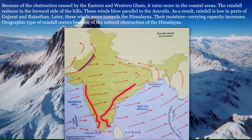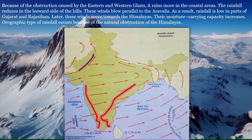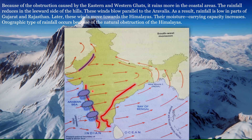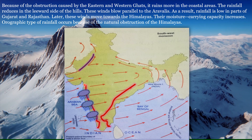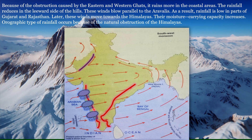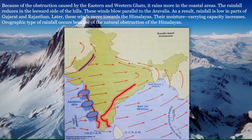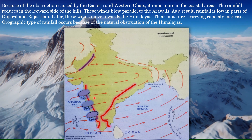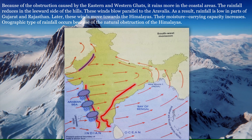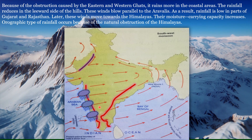Because of the obstruction caused by the Eastern and Western Ghats, it rains more in the coastal areas. The rainfall reduces on the leeward side of the hills. The coastal area is on the windward side of the Sahyadri mountains, so it experiences more rain. When the winds cross the Sahyadri mountains, they lose moisture and the region on the other side experiences scanty rainfall — this is called the leeward side.